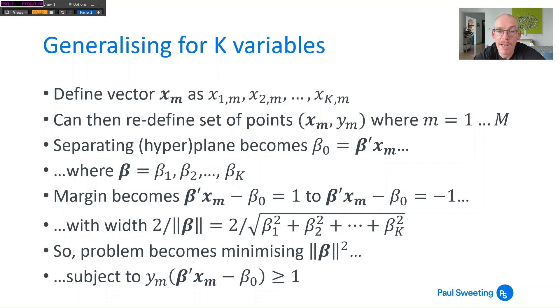So the problem now becomes minimizing the norm of β squared, which is going to give you the largest margin again subject to yₘ times bold β transpose xₘ minus β₀ is greater than or equal to 1. So it's exactly the same as before, it's just you've replaced your β₁x₁ₘ and β₂x₂ₘ with a vector of betas and a vector of x's.